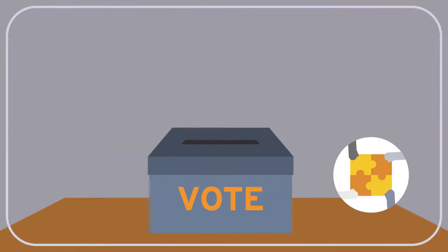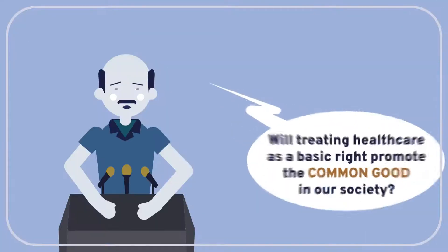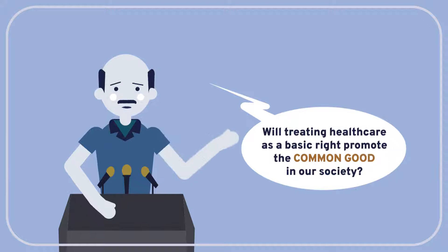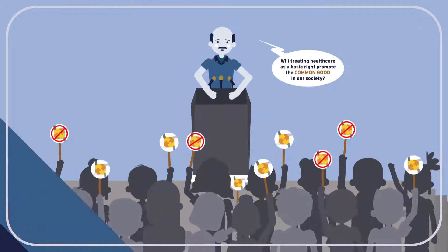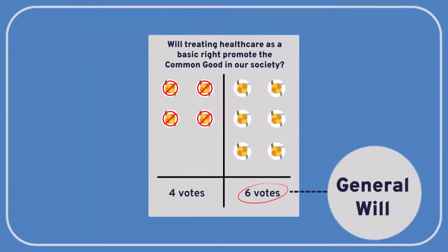In this case, Rousseau disagreed. He thought that democratic elections were the best way to figure out what's best for society as a whole. You ask the citizens whether a certain policy would promote the common good, and each man in giving his vote states his opinion on that point, and the general will is found by counting votes.